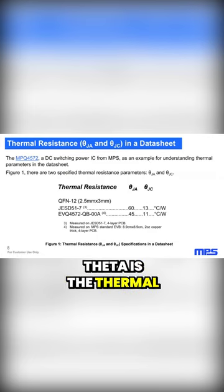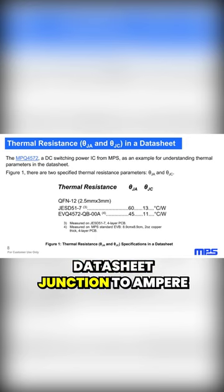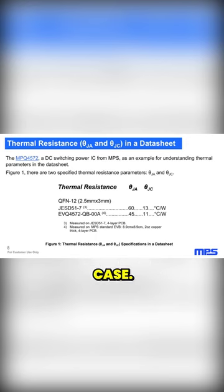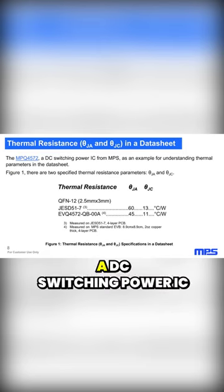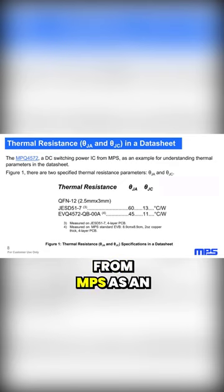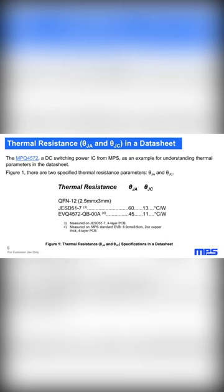Theta is the thermal resistance, specified in a datasheet as junction to ambient and junction to case. We see here a snippet from the MPQ4572, a DC switching power IC from MPS, as an example for understanding thermal parameters in the datasheet.